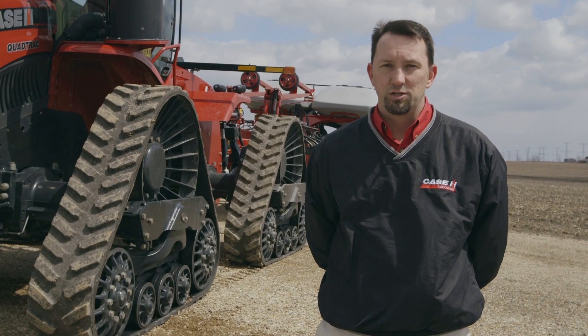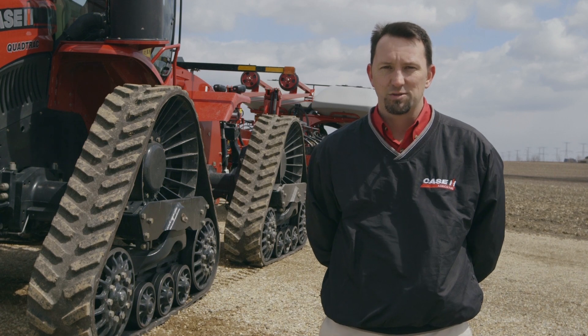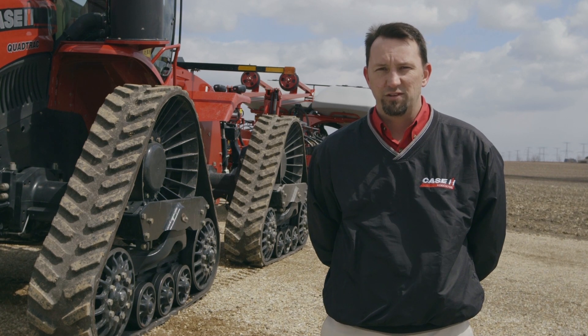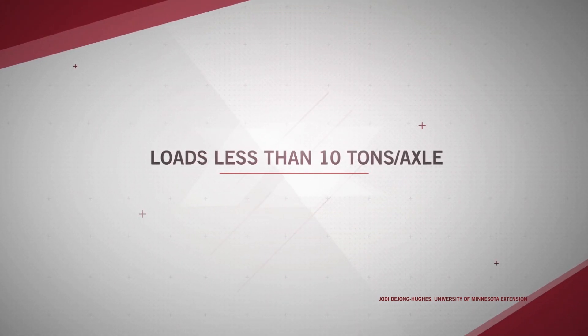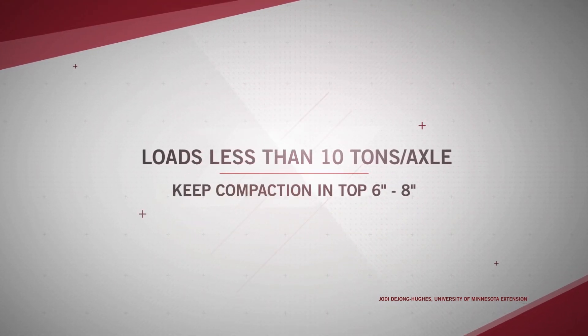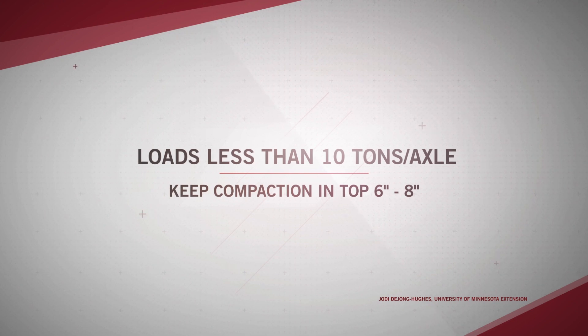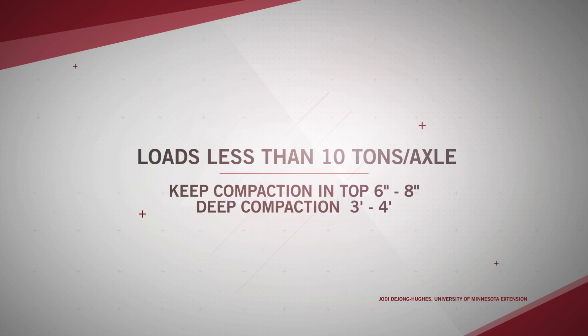Jody DeYoung-Hughes, a regional extension educator in crops and soils from the University of Minnesota Extension, says that axle loads less than 10 tons per axle can keep compaction in that top 6 to 8 inches of soil. She also says that axle loads of the heavy equipment used today can cause compaction as far as 3 to 4 feet deep — that's called deep compaction. Deep compaction is one of our greatest concerns because its true adverse impact on yields may not be seen for the first several years.